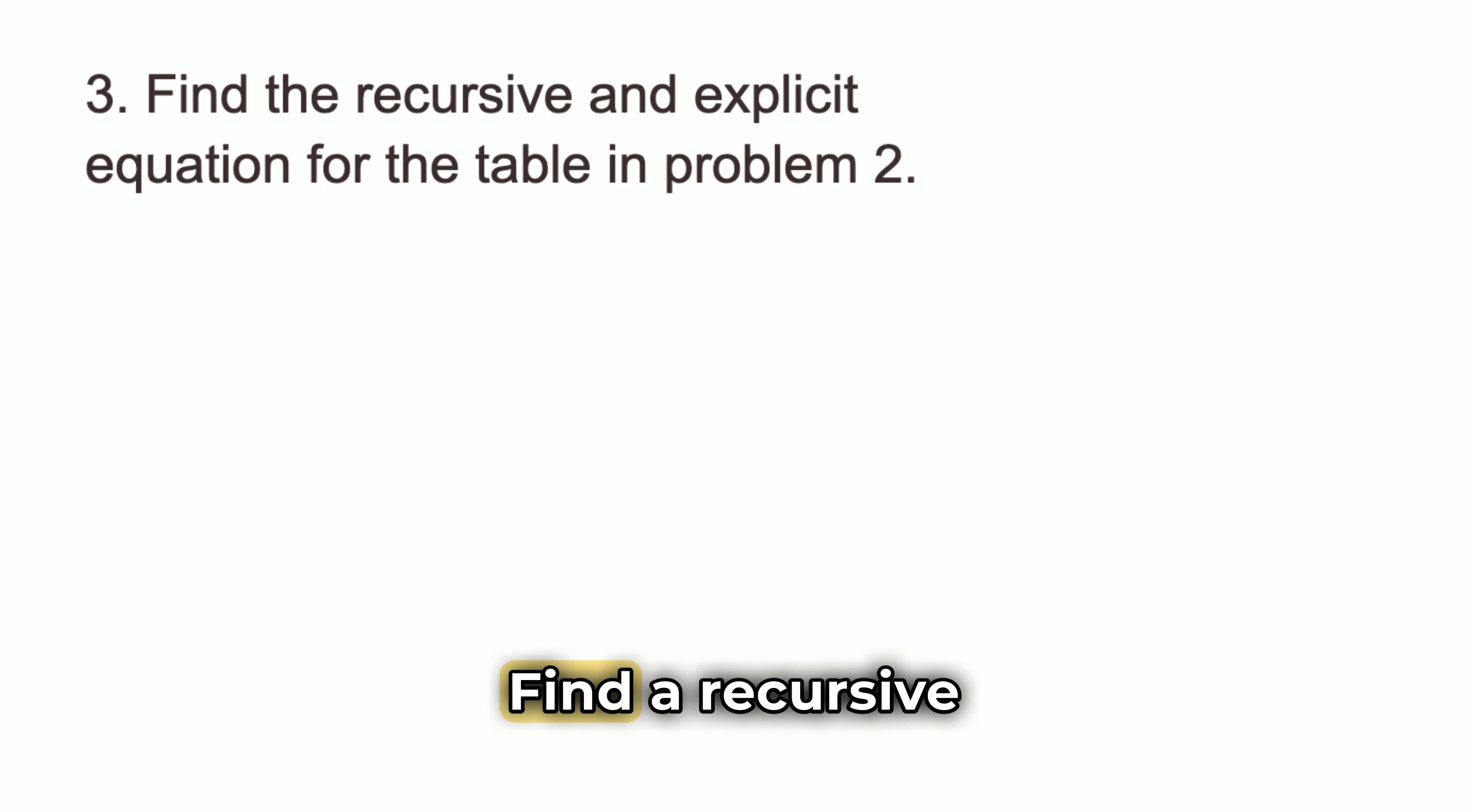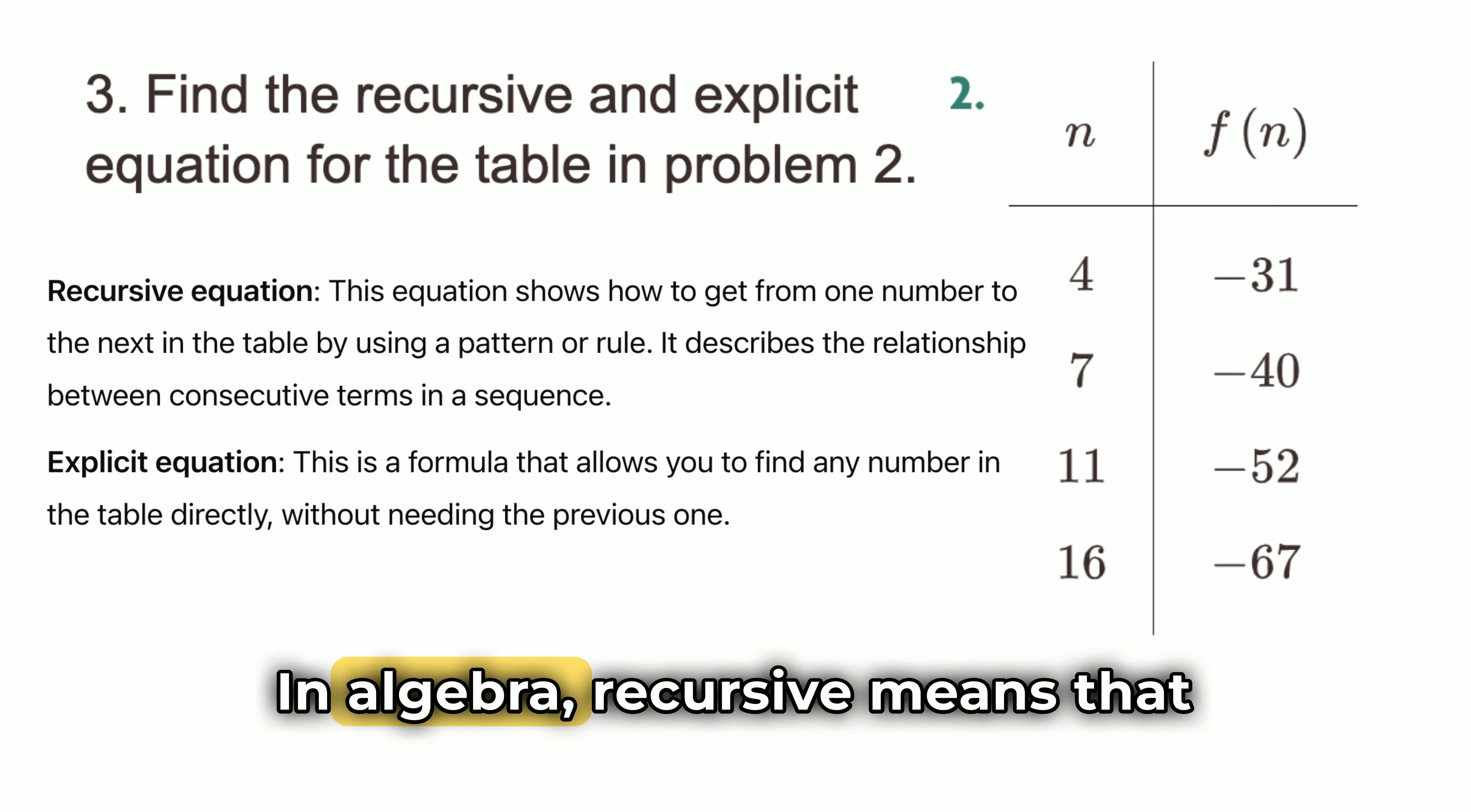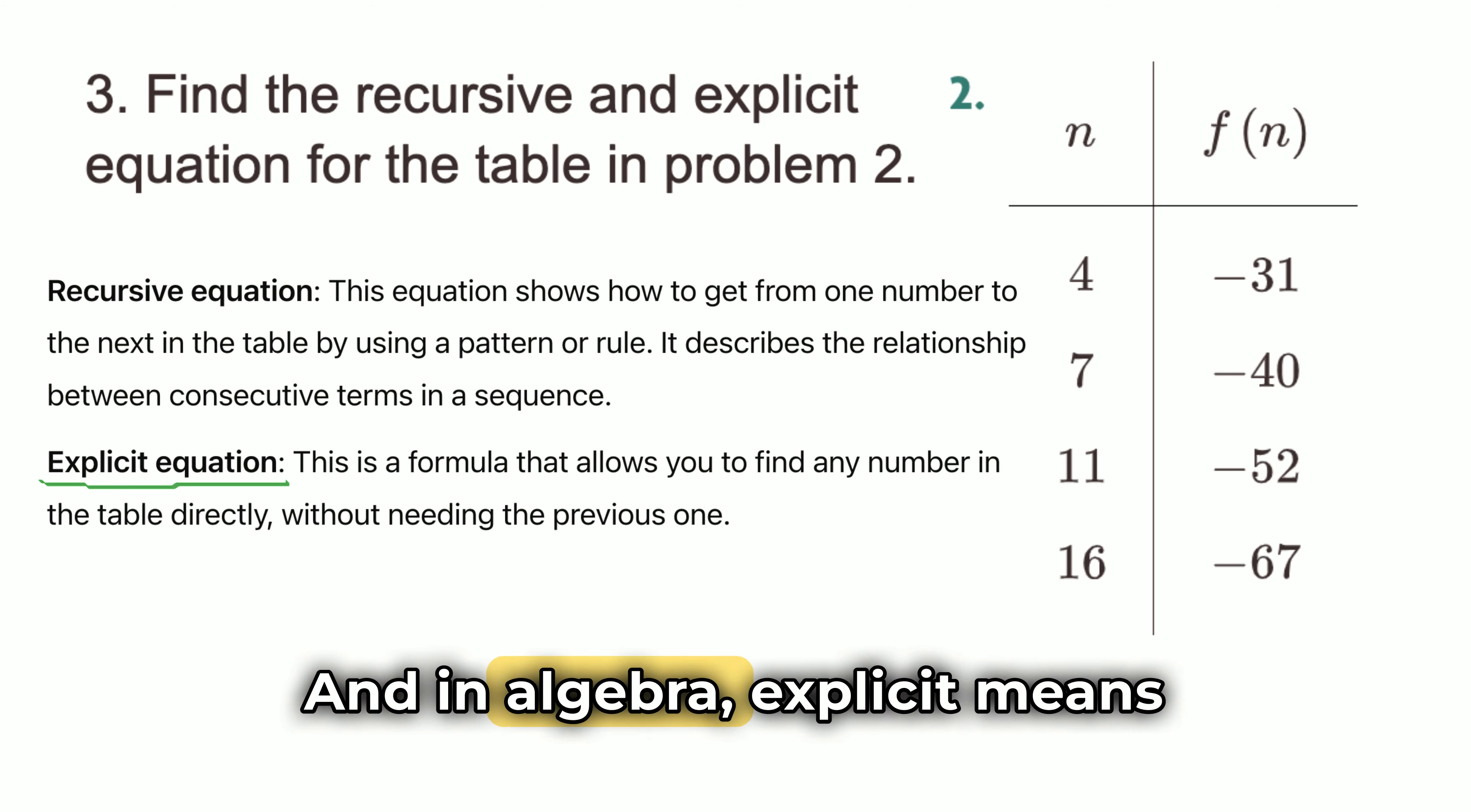Problem 3. Find a recursive and explicit equation for the table in problem 2. In algebra, recursive means that each number in a pattern or sequence is found by using the number that came before it. Instead of just having a formula that tells you exactly what the number is, you use the previous number to find the next one. And in algebra, explicit means a formula that lets you find any number in a pattern or sequence directly without needing to know the previous numbers.